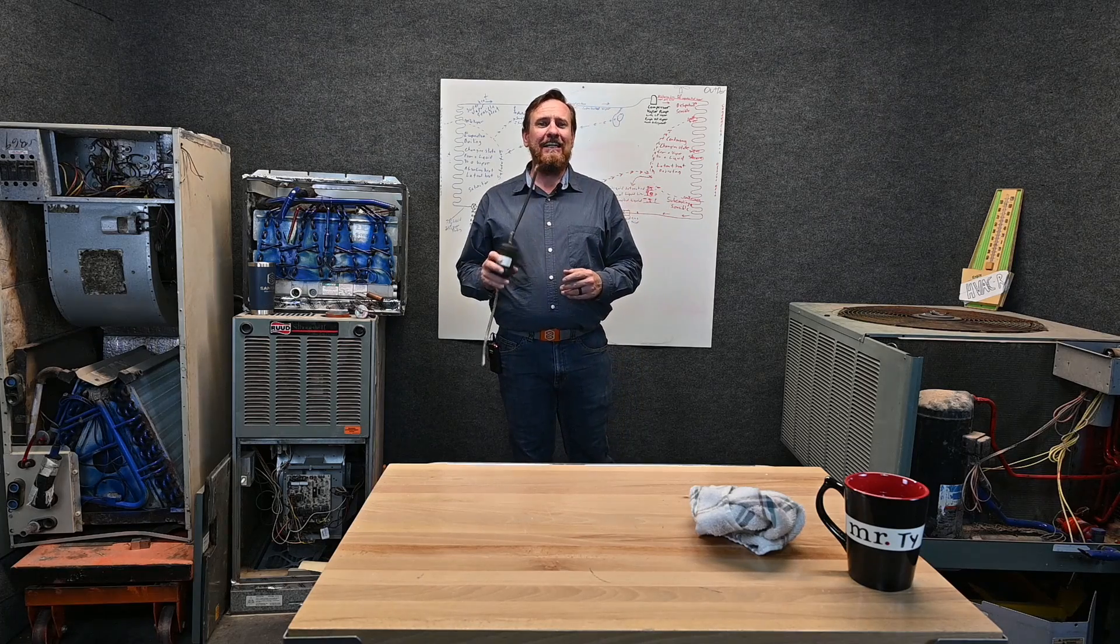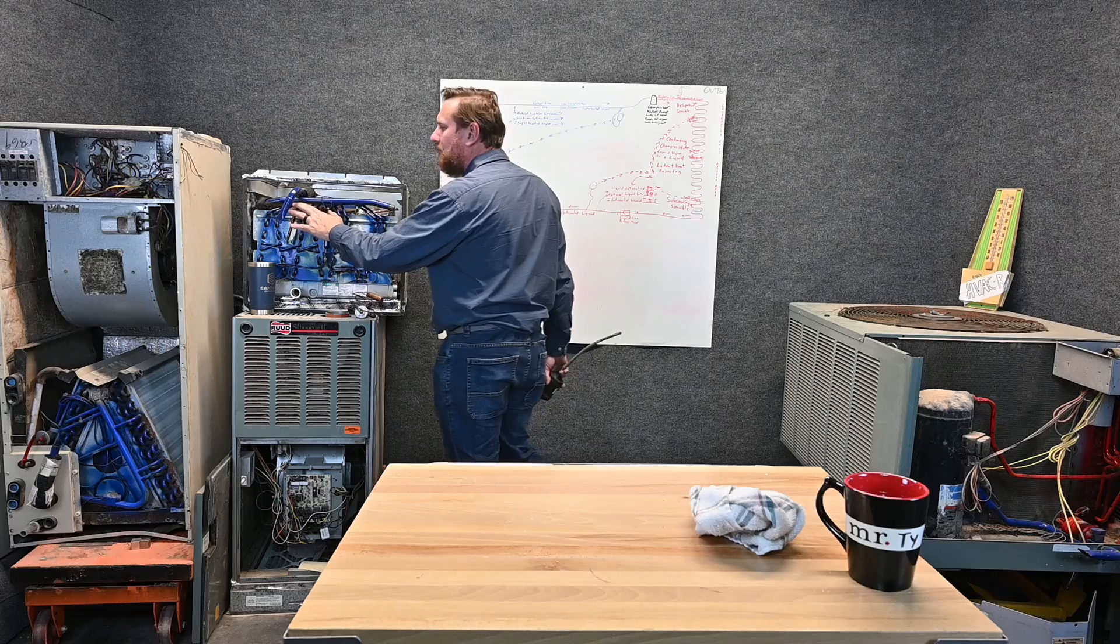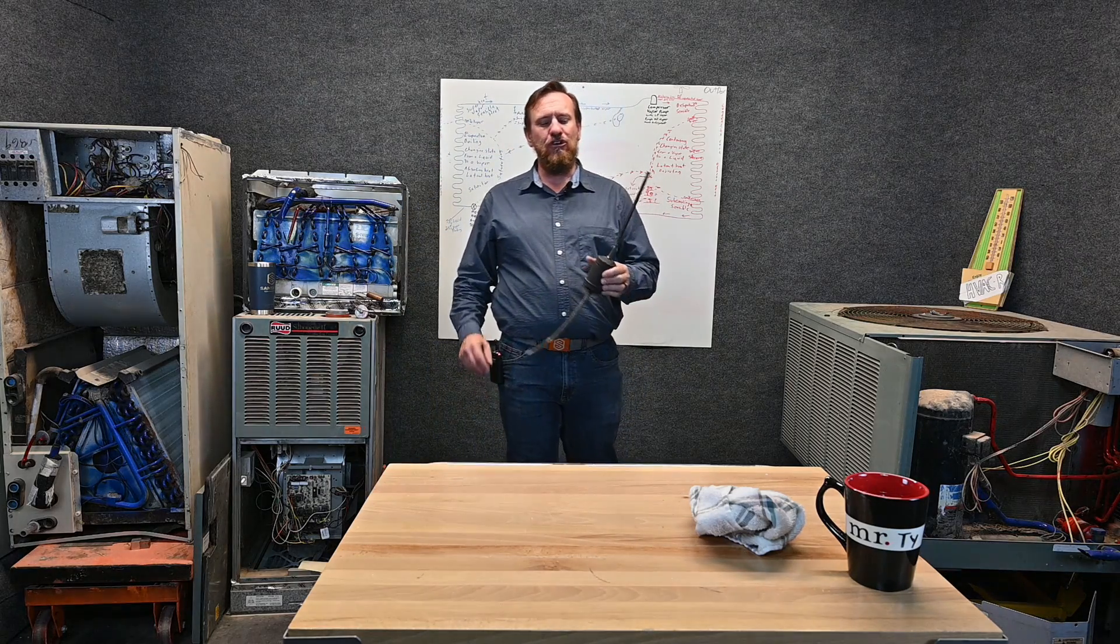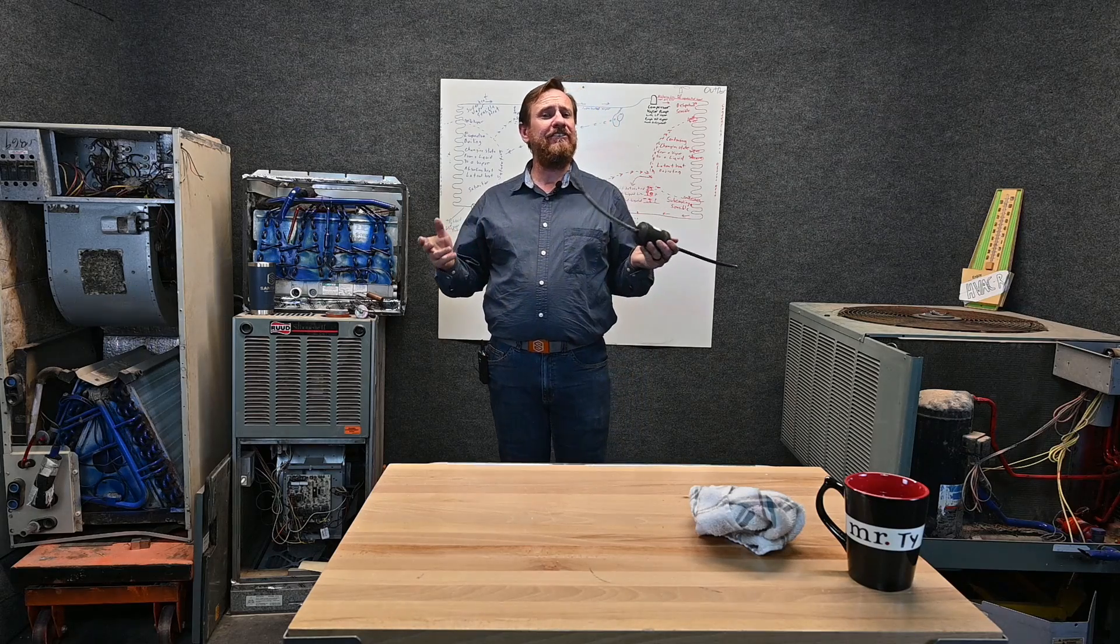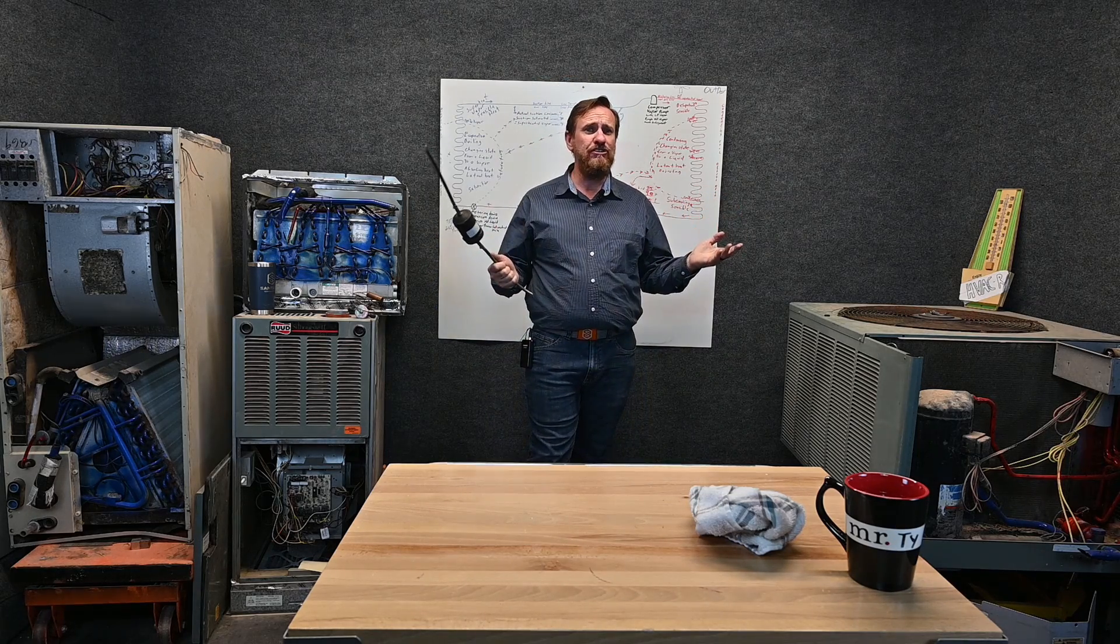Now let's talk about our liquid line. The liquid line is carrying liquid refrigerant from the condensing unit over to our metering device at the inside. On light commercial and residential that's usually going to be a three-eighths liquid line regardless of the size. But this liquid line on commercial gets huge in size.